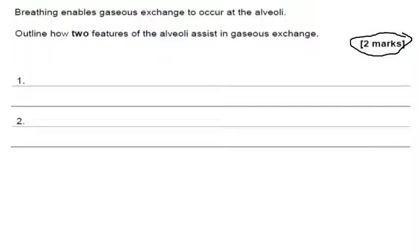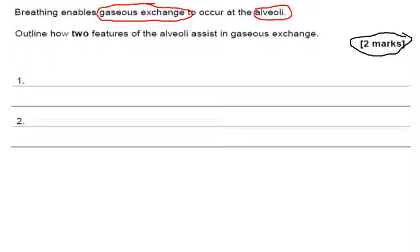A good process to start with is to highlight, underline, or circle the topic words. We know that our topic words today are gas exchange — so I'm going to circle that — and also specifically the alveoli. So I'm going to circle my two topic words: gas exchange and the alveoli.